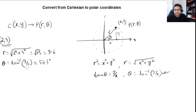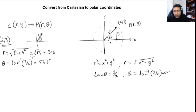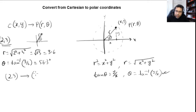We can see that the point (2, 3) sits in the first quadrant. We found r = 3.6 and theta = 56.3°, so the Cartesian coordinate (2, 3) can be written in polar form as (3.6, 56.3°).